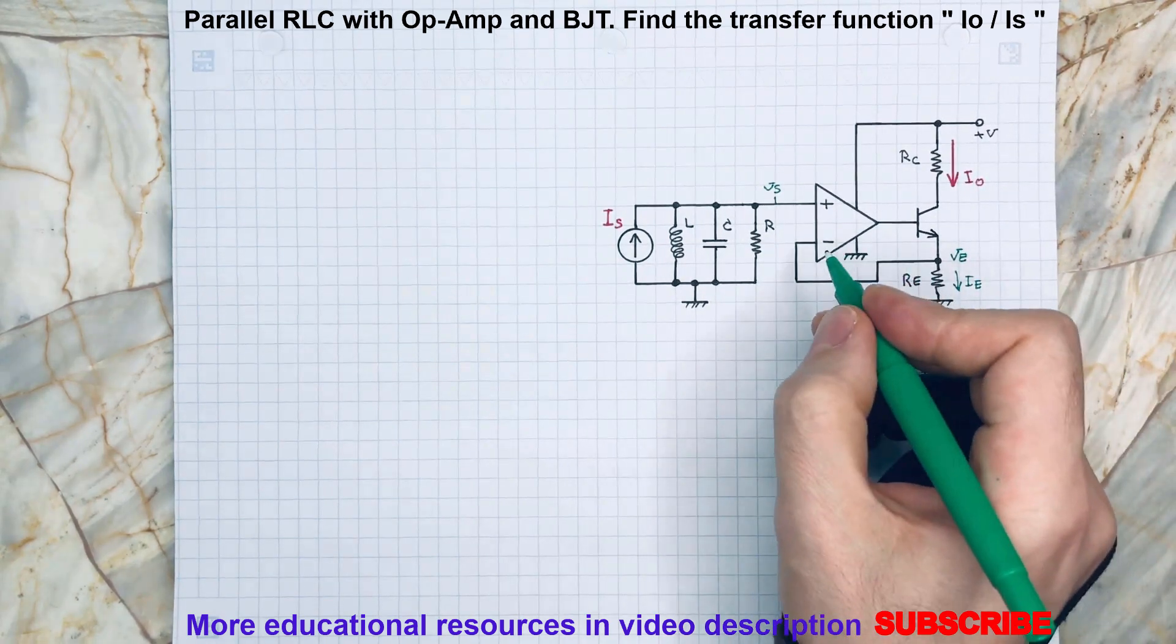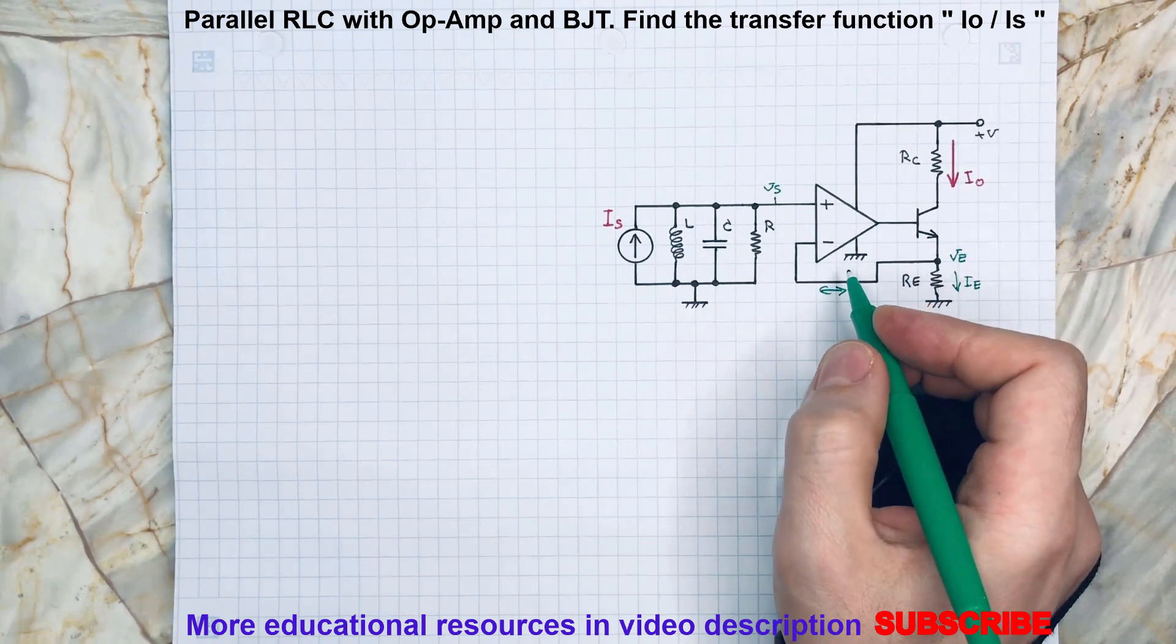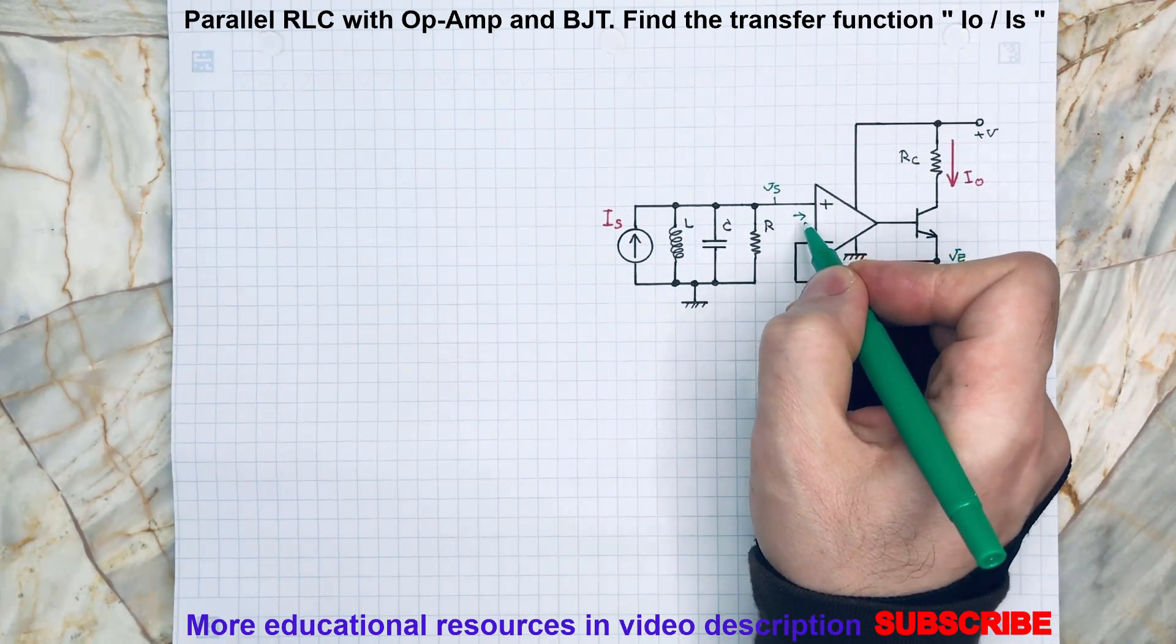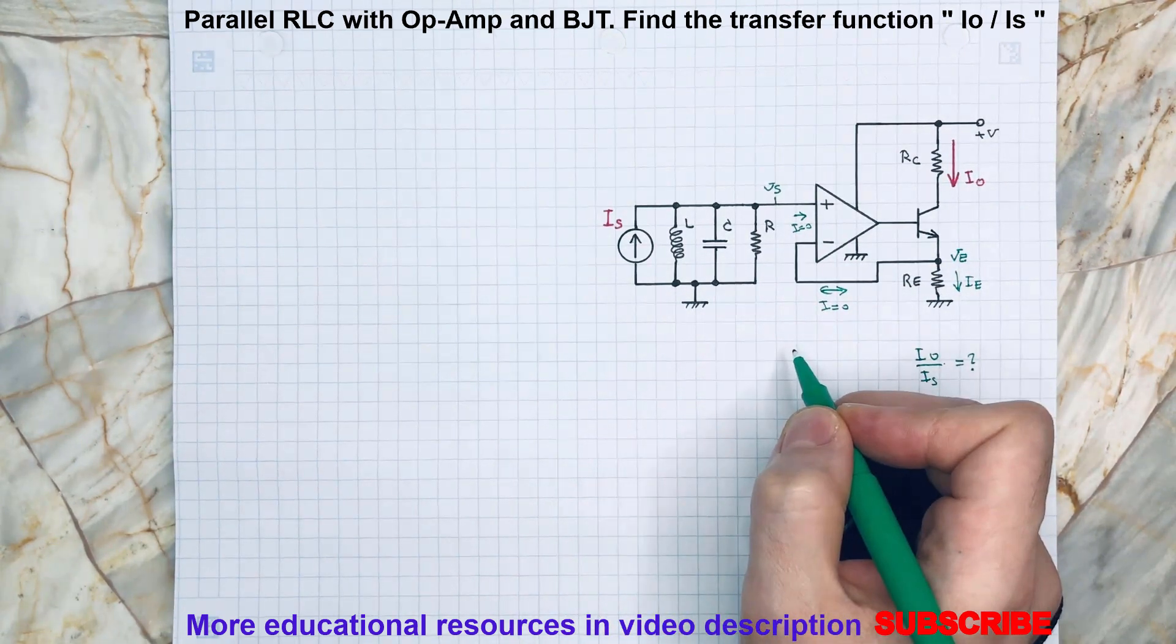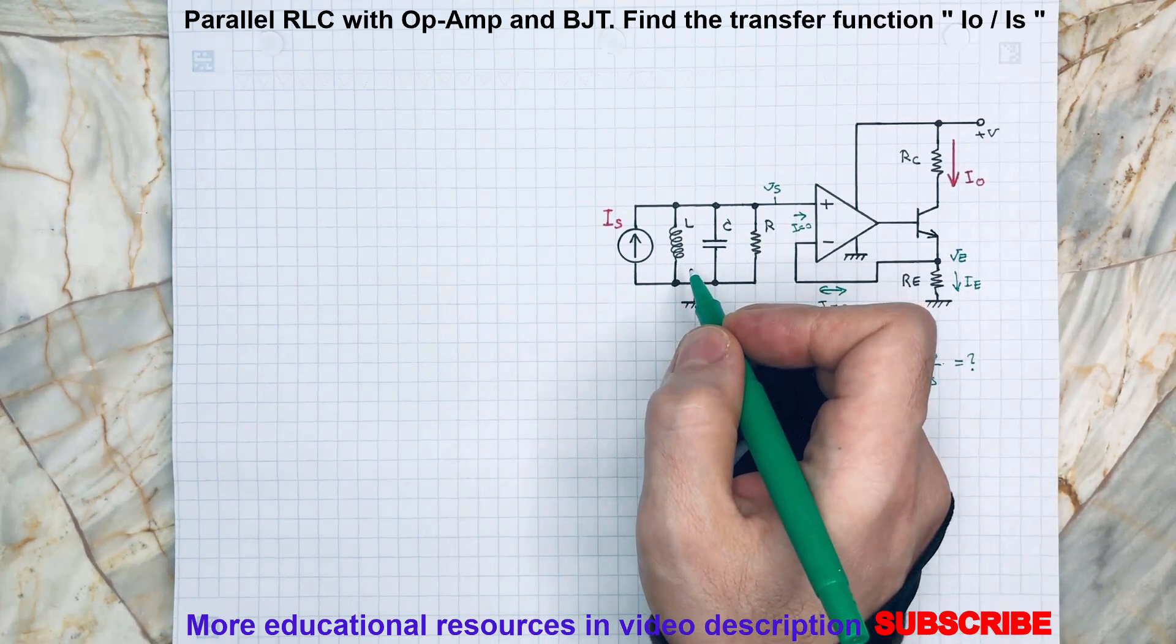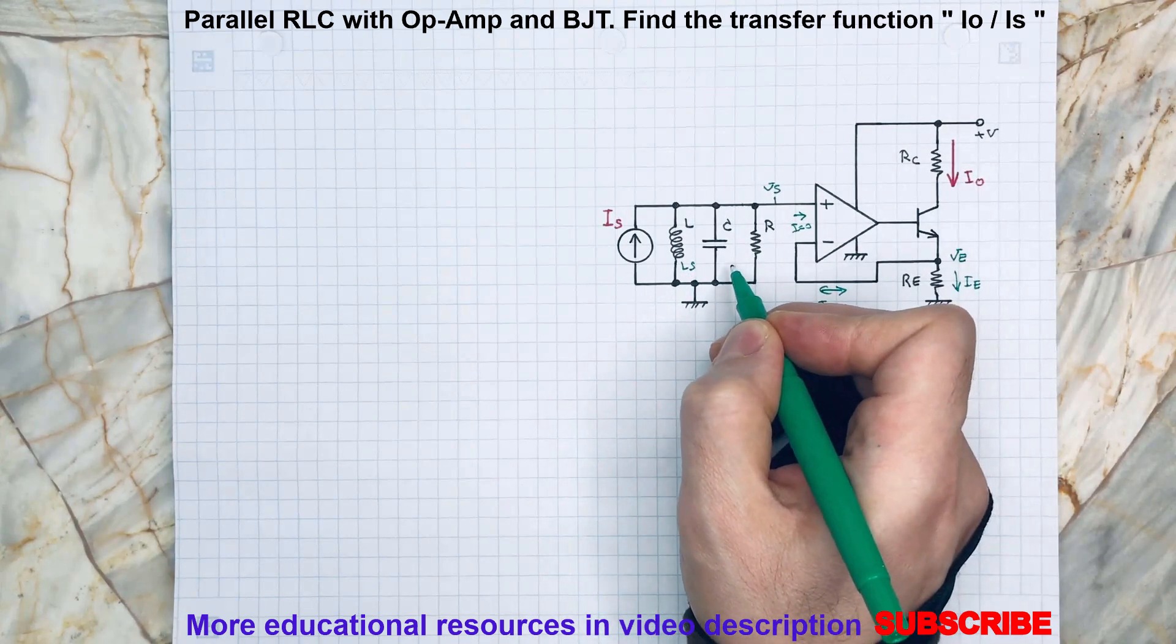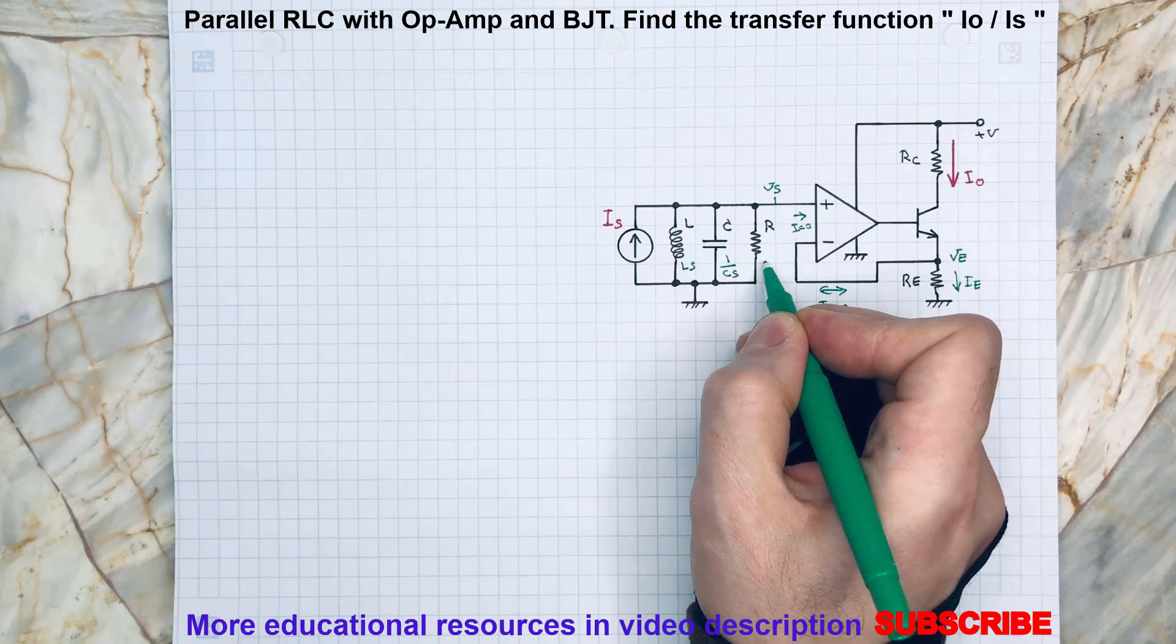As you may know, there is no current passing through op-amp terminals because of the high input impedance of the op-amp. The same here. And we are going to use Laplace transform. So Laplace transform of inductor is going to be LS, and for capacitor is going to be 1 over CS. For resistors remain R.